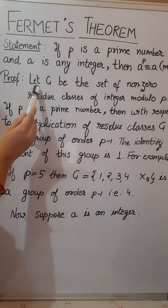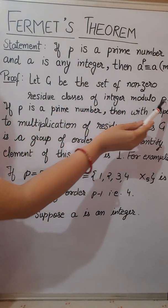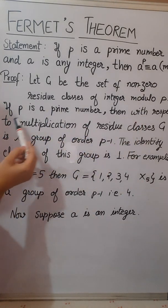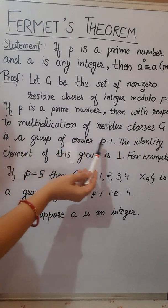So its proof is: let G be the set of nonzero residue classes of integers modulo p. If p is a prime number then with respect to multiplication of residue classes G is a group of order p minus 1.